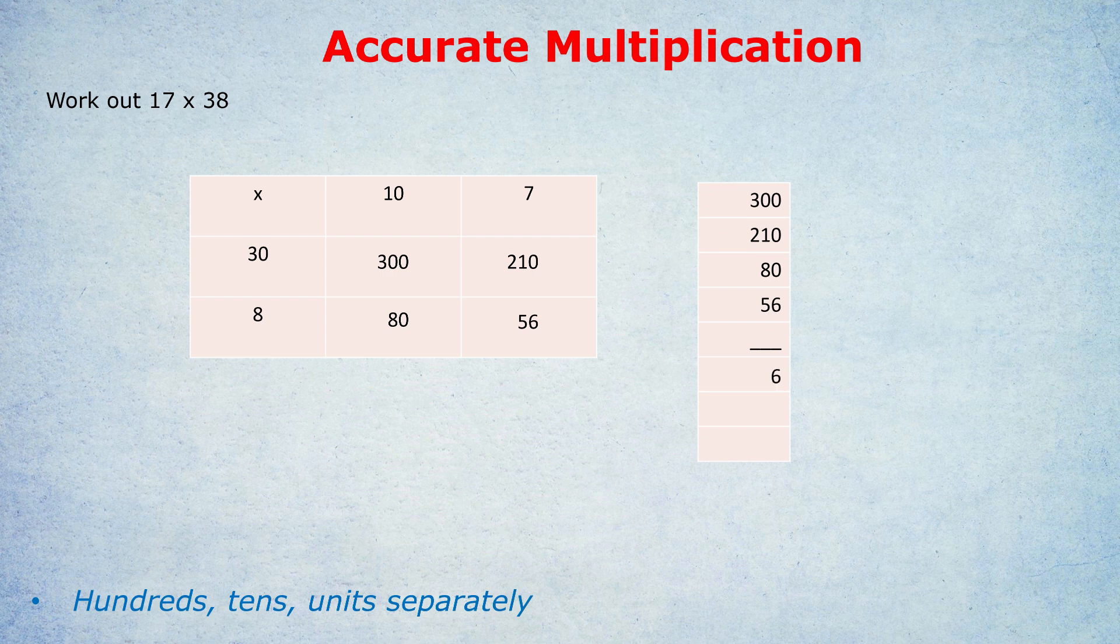Look at the tens digit column: 0 plus 1 plus 8 plus 5. What would that be? 14. So we put a 4 down below and we carry a 1 because it was 14. We carry a 1 onto the next column, so we draw a little 1 on the next column. 1 plus 3 plus 2 is 6, so the answer becomes 646.